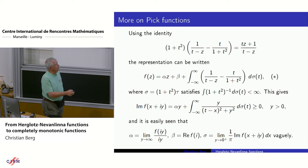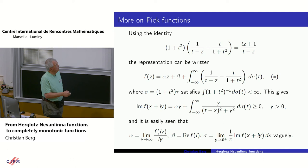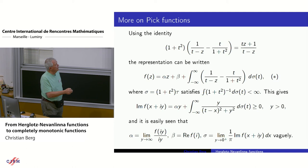She put a factor 1 over pi, but that's just a scaling of the measure. It is easy to calculate the imaginary part of this expression, which gives the Poisson kernel from the upper half plane — certainly with the factor 1 over pi. It is clear from this formula that these functions have a non-negative imaginary part.